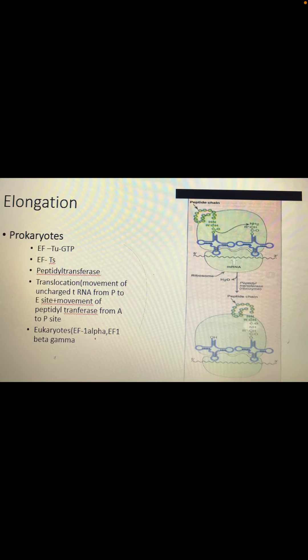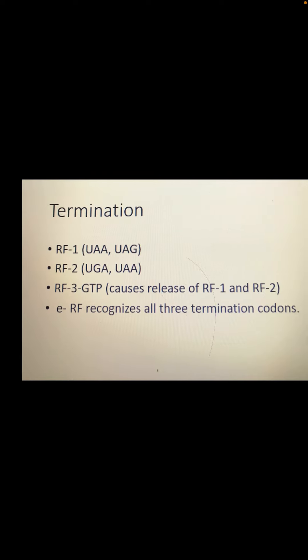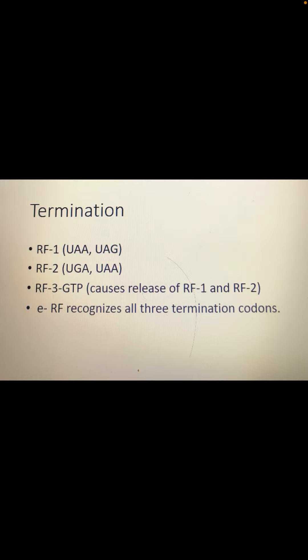Elongation involves elongation factors EF-Tu, EF-Ts, and peptidyl transferases in prokaryotes. Eukaryotes have different types of elongation factors as well. Termination factors are called releasing factors — releasing factor 1, releasing factor 2, and releasing factor 3 in prokaryotic organisms. Eukaryotic organisms have only one releasing factor that recognizes all termination codons.